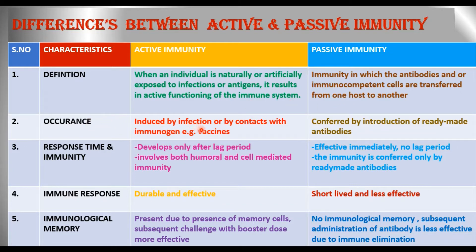Regarding occurrence: active immunity is induced by infection or by contact with the immunogen — the best example is vaccination. Passive immunity is conferred by introduction of ready-made antibodies.